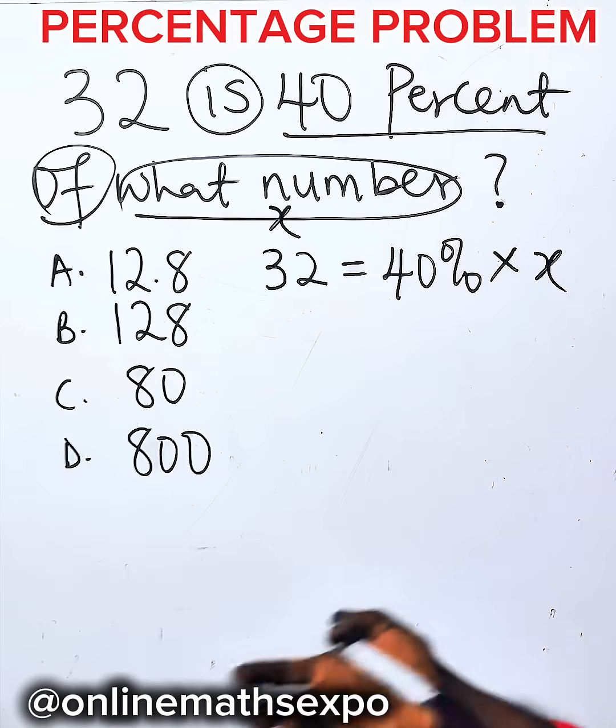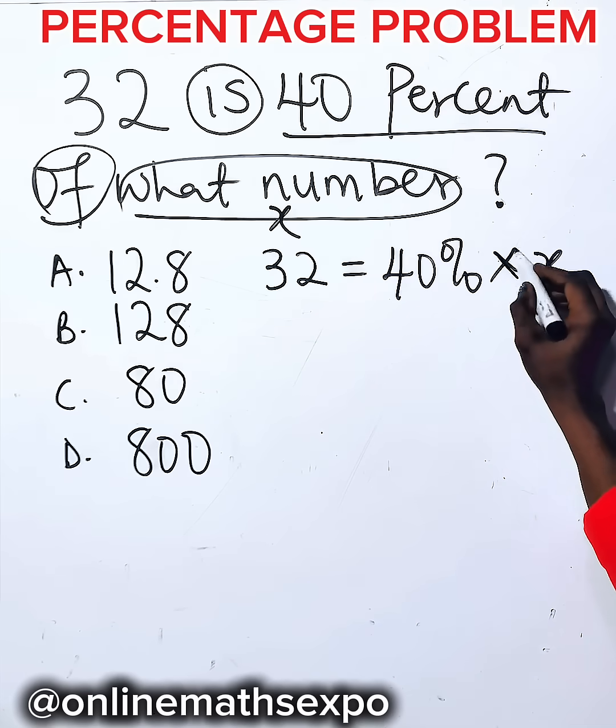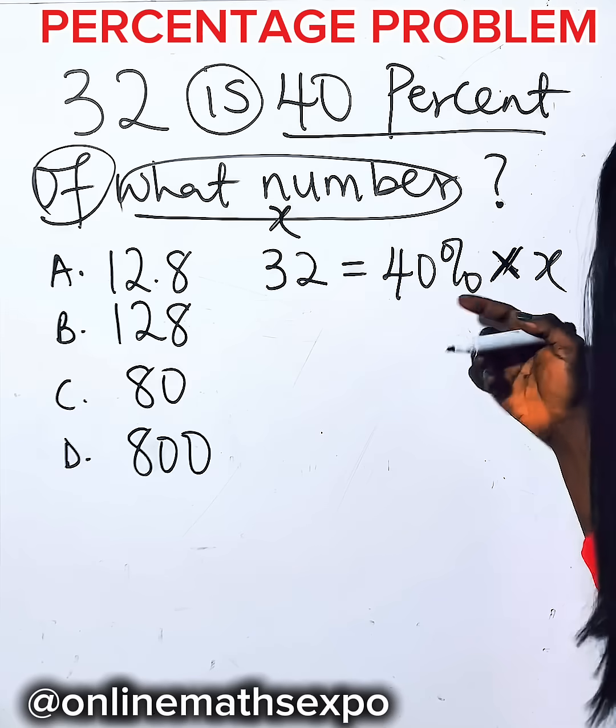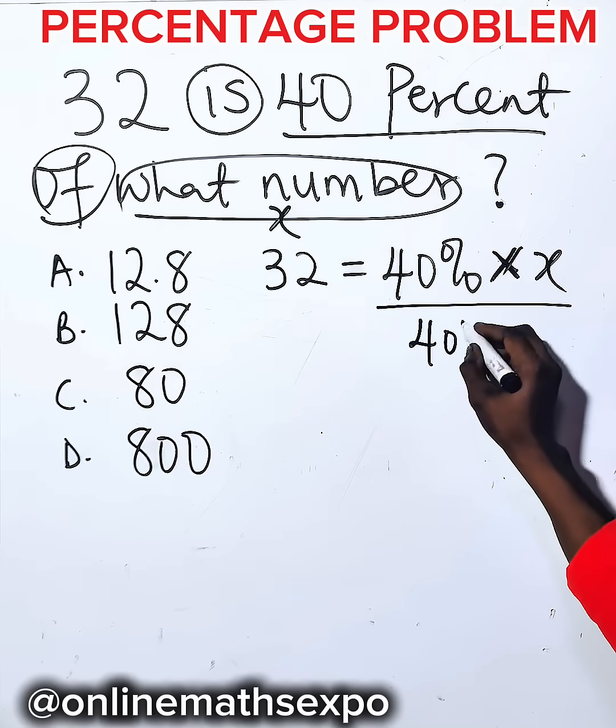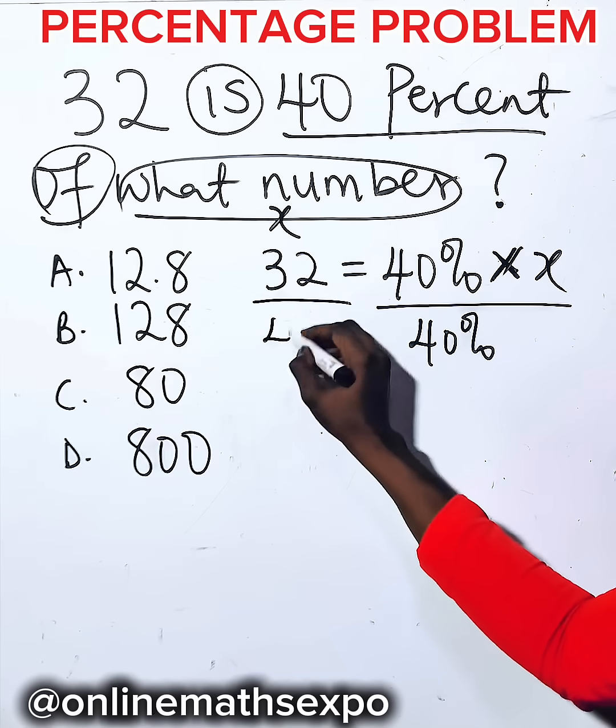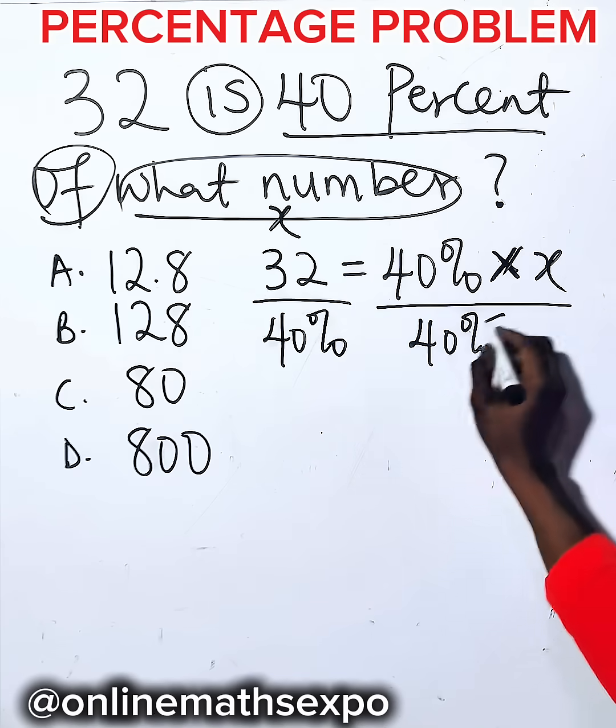Now how do you solve it? You observe that because x is being multiplied, to remove the multiplication the opposite is to divide. So you are dividing by 40 percent on both sides. This will cancel, and you are left with x.